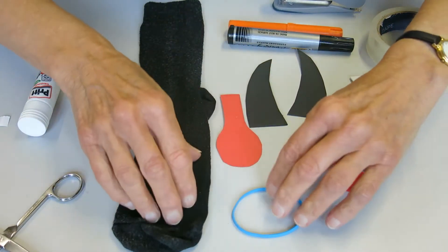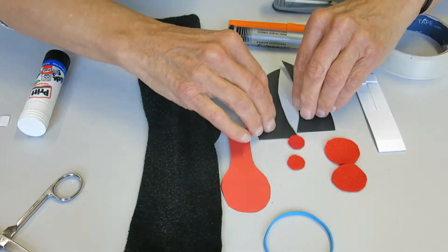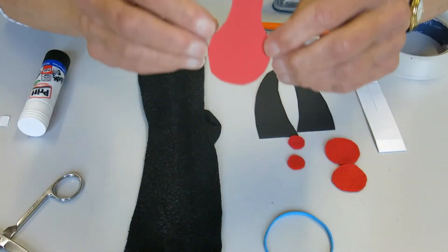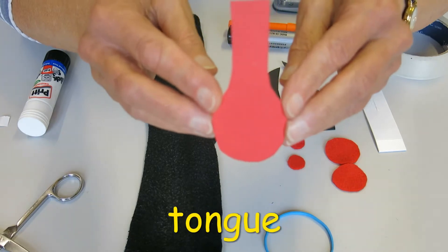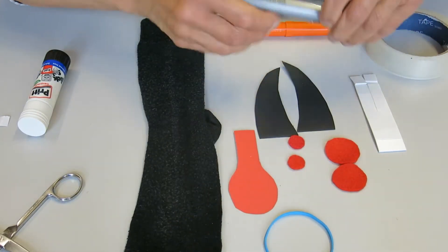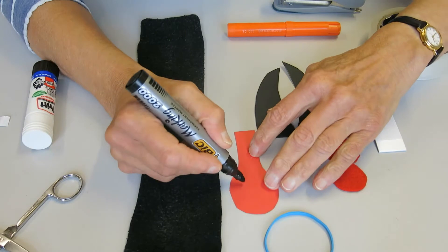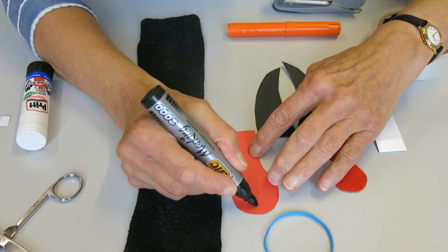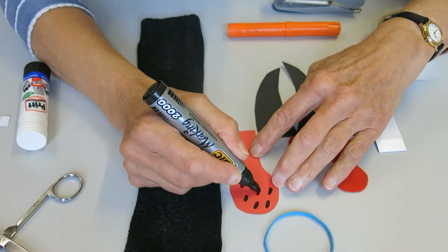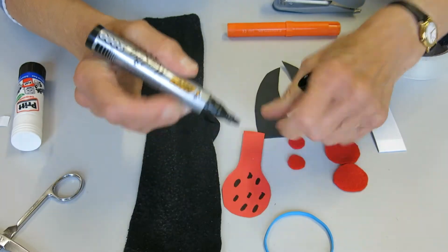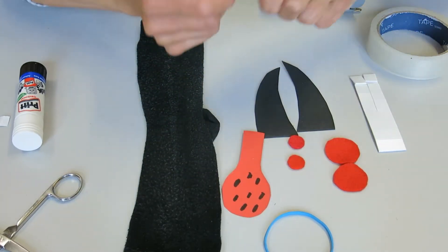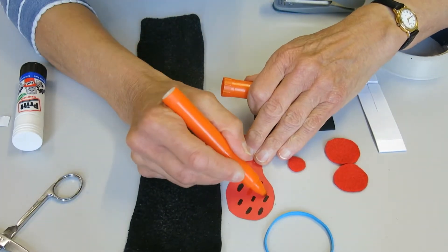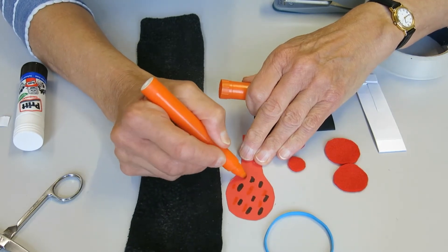We need to get all the bits ready before we start to make him. This is the shape for his tongue and you might want to make his tongue look a bit more Hobnob-like. So I'm going to put some dots on. It just makes him look a bit fiercer.